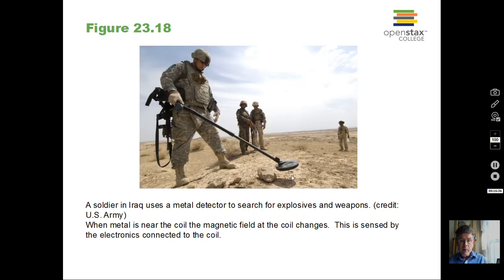Another example is a metal detector. If there's a piece of metal near the coil, it will change the magnetic field concentrated inside the coil, and the electronics connected to the coil can sense that and give a signal indicating there's metal underneath — because of the interaction of the magnetic field with metal.